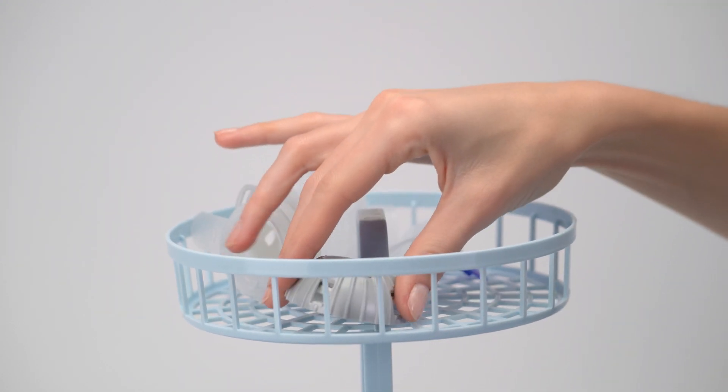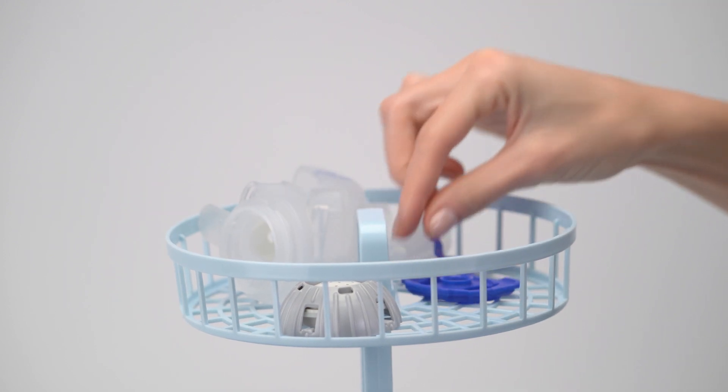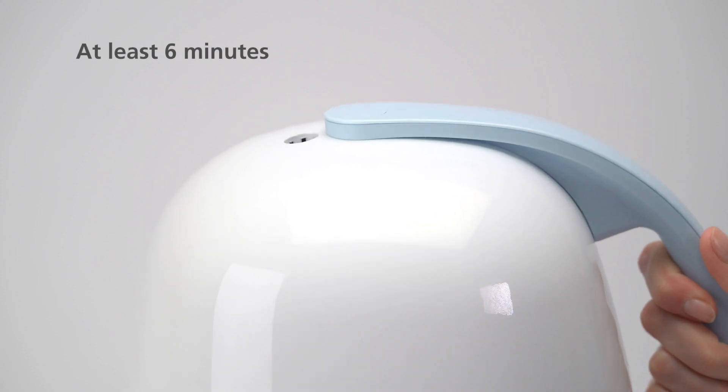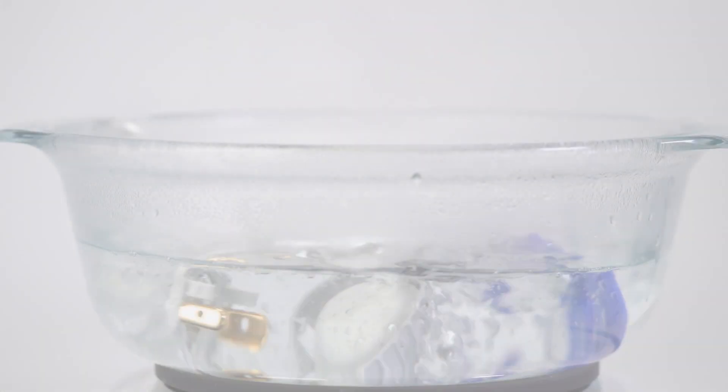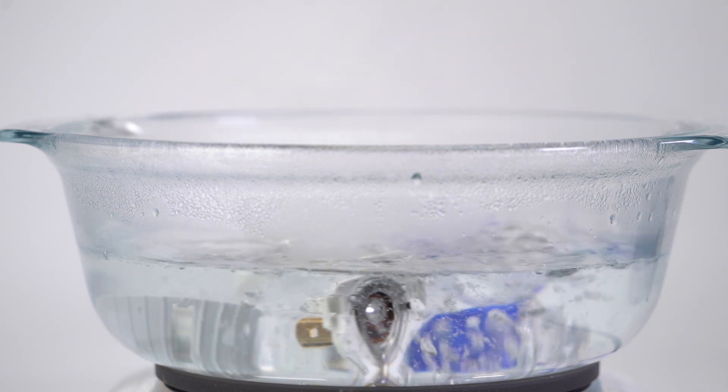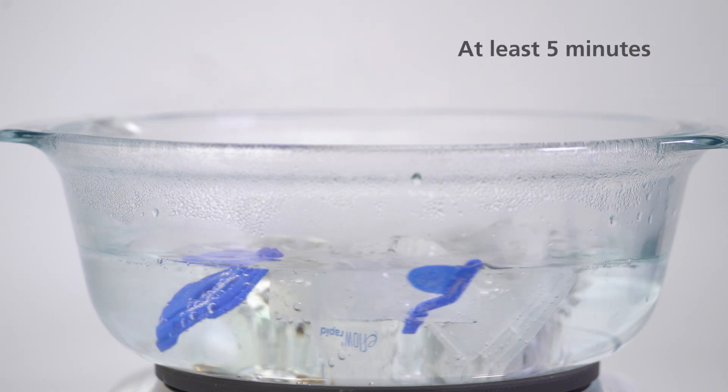To do this, use a standard baby bottle disinfector and run for at least six minutes. Alternatively, you can use a saucepan with distilled water for at least five minutes on a rolling boil.